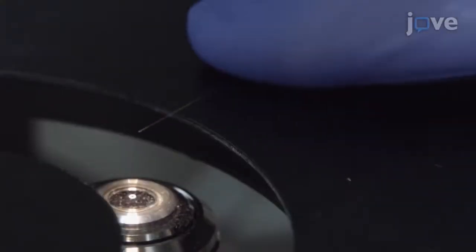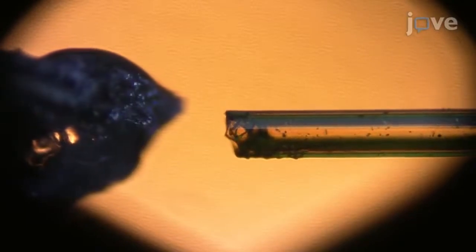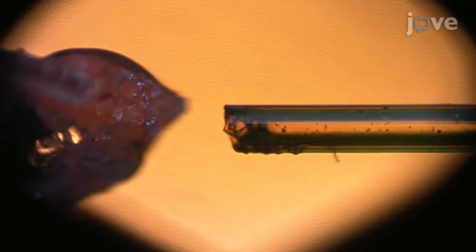After examining the tubing for cracks, use a micro-forge to heat polish the ends to ensure the tubing openings have a smooth surface.